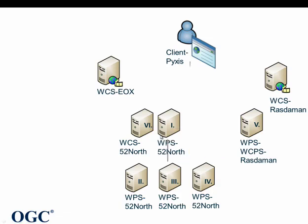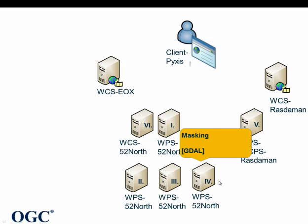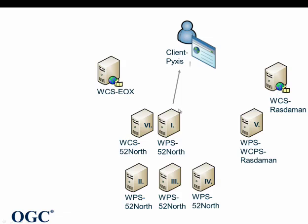The results are fed back to the orchestration WPS and the third WPS is called, which fetches the data from the previous step and does some masking on potential drought areas using GDAL. The results are served back and stored in a WCS, and then the WCS URL and coverage name are served back to the Pixis client.